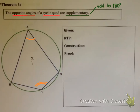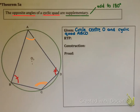In this figure, angle A and angle C add to 180 and angle B and angle D will add to 180 degrees. We're given circle center O and cyclic quad ABCD. What are we trying to prove? We're trying to prove that angle A plus angle C equals 180 degrees, and secondly, that the other pair of opposite angles also add to 180 degrees.